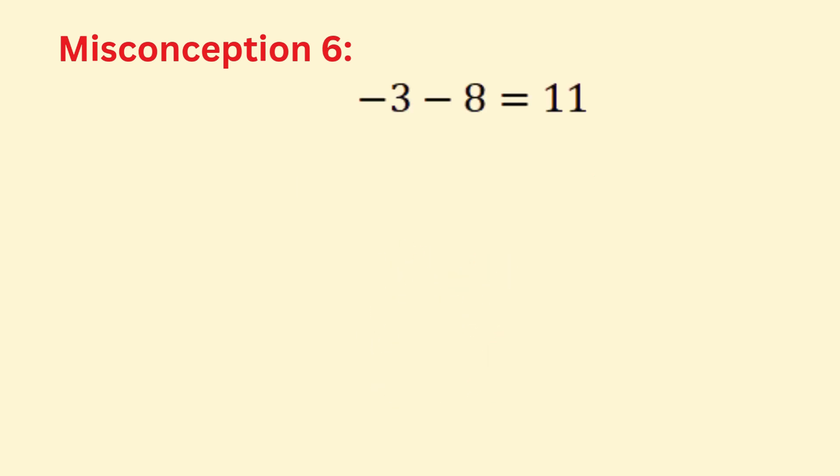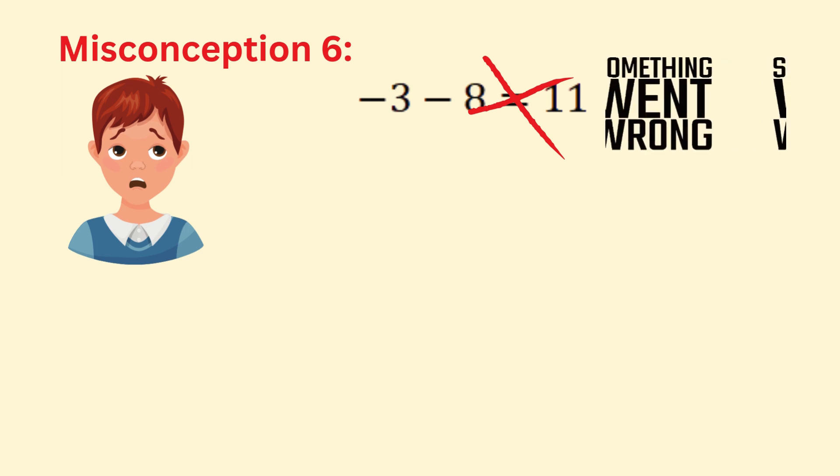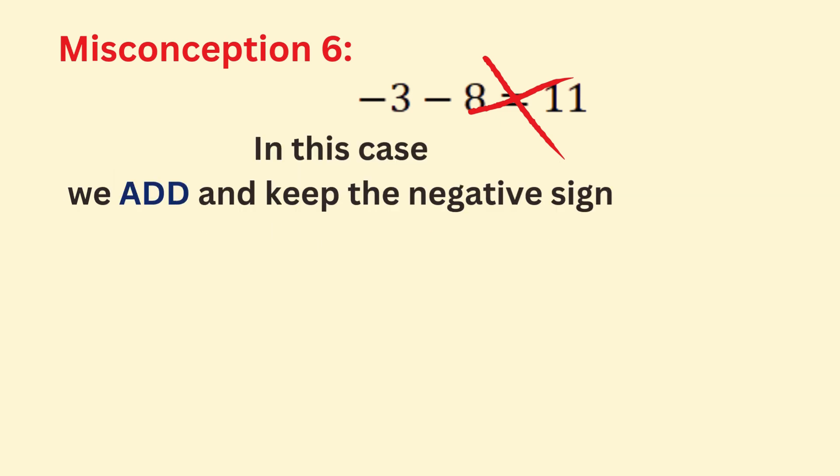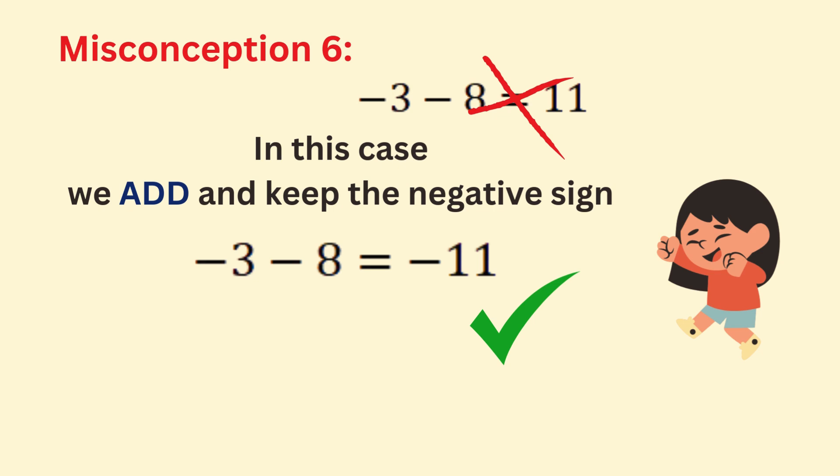This mistake happens because students confuse the rule that two negatives make a positive, which only applies to multiplication and division. In addition or subtraction, two negatives make a more negative number. To fix this, use a number line or algebra tiles to visualize the problem.